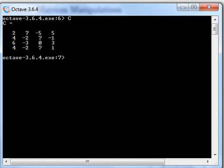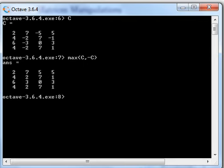We have C here. What we're going to do is max of C and minus C. That's the approach we're going to take. This is going to turn all the negative numbers into positive numbers and leave all the positive numbers alone.